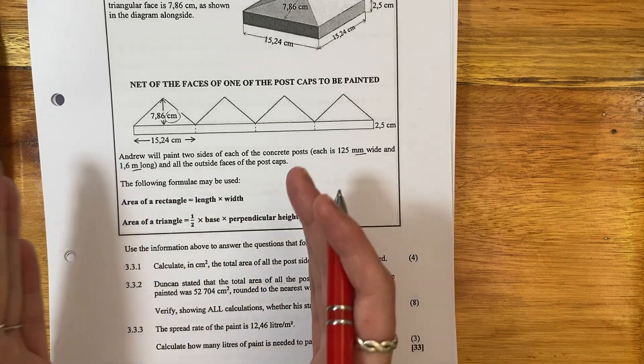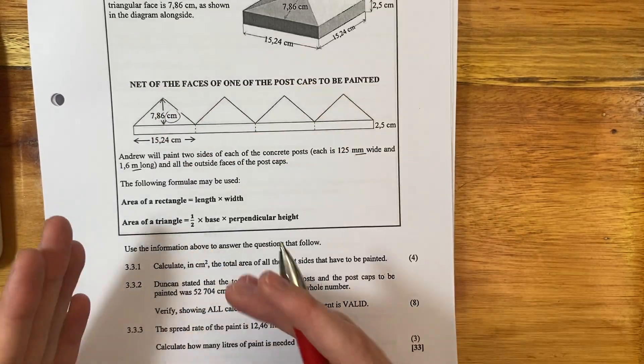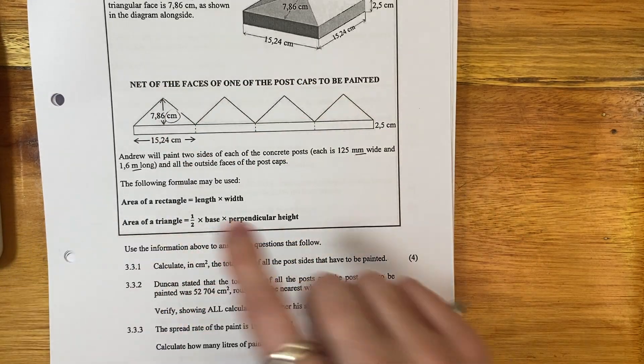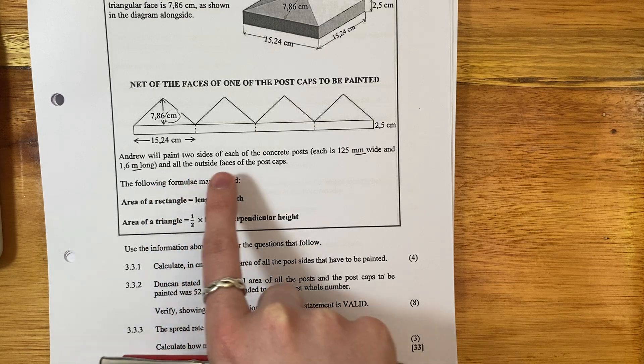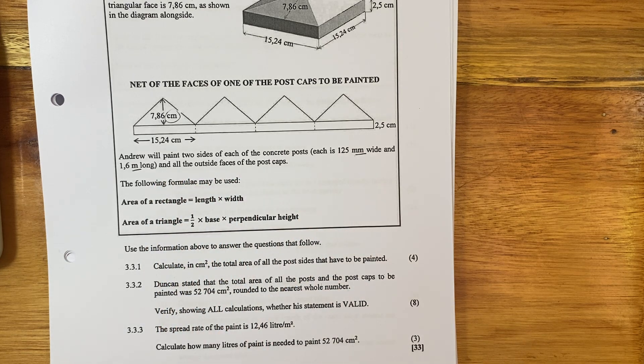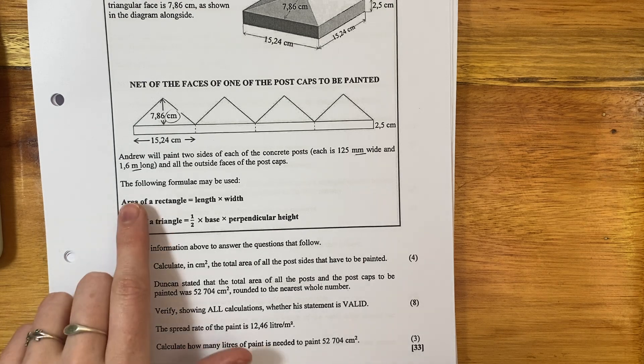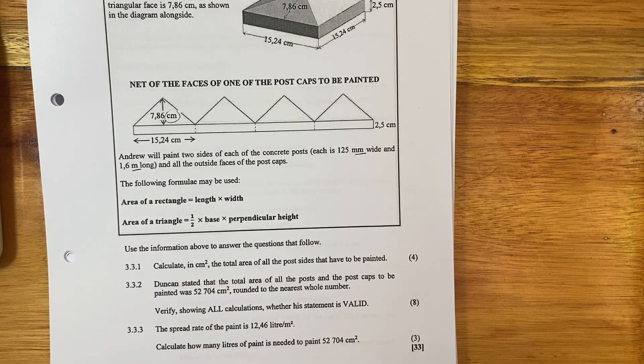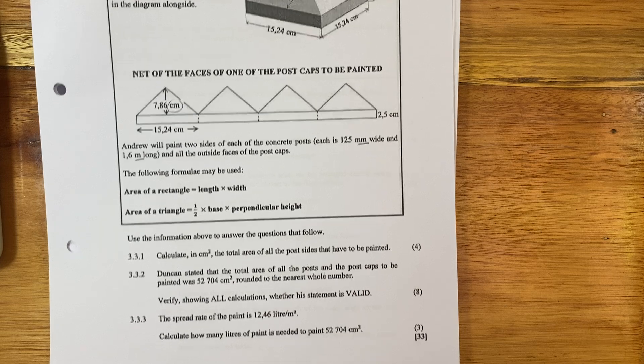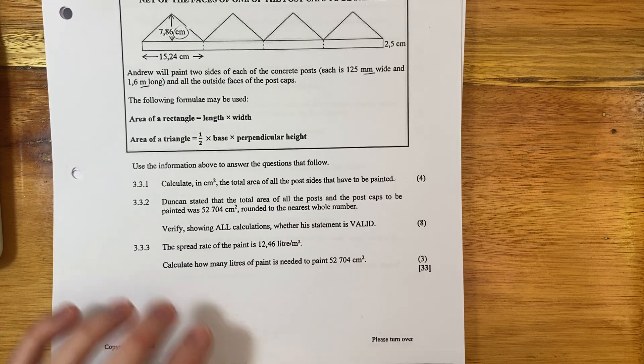Andrew will paint two sides of each of the concrete posts and all the outer faces of the post caps. So basically, he's going to paint two sides of the posts, and then at the top, he's going to paint all of the faces of the post caps.